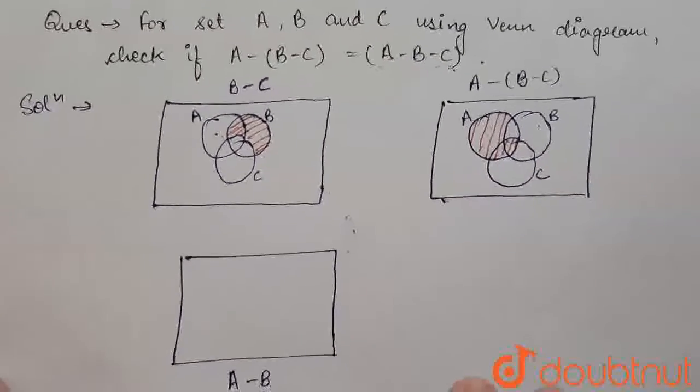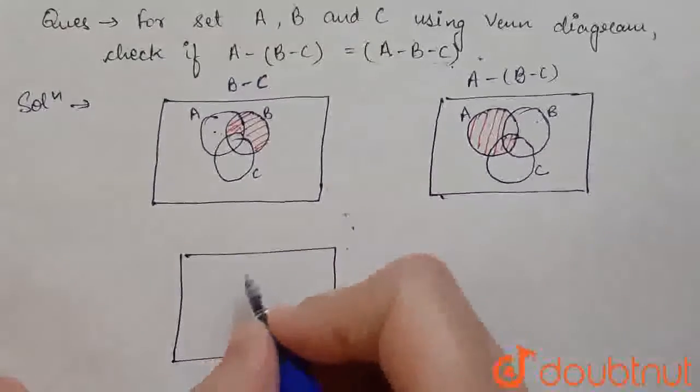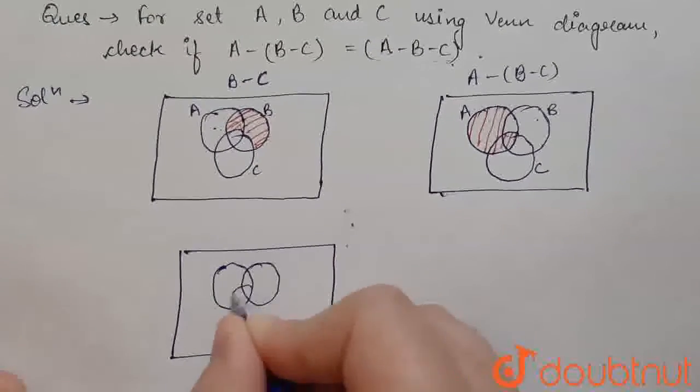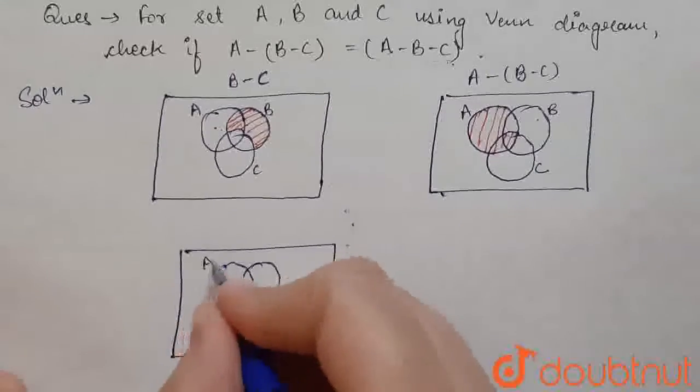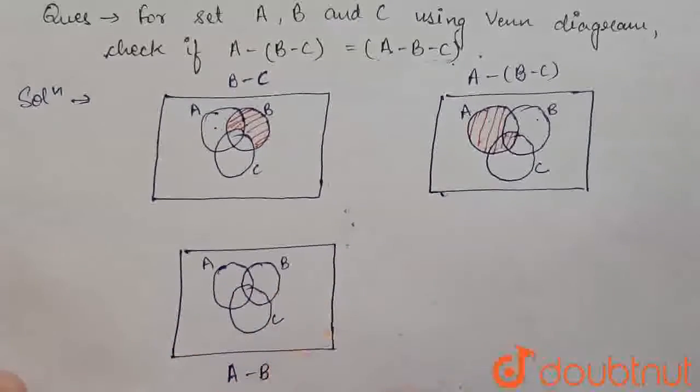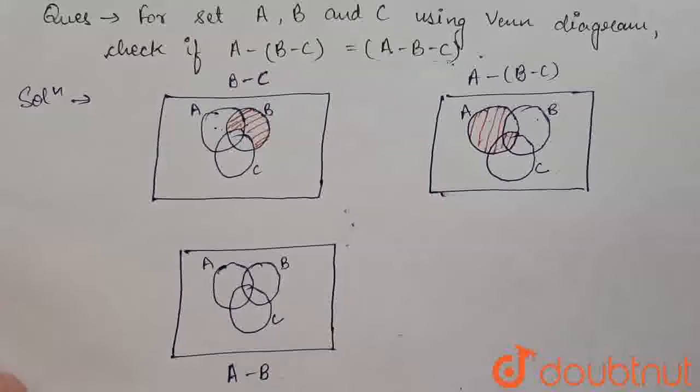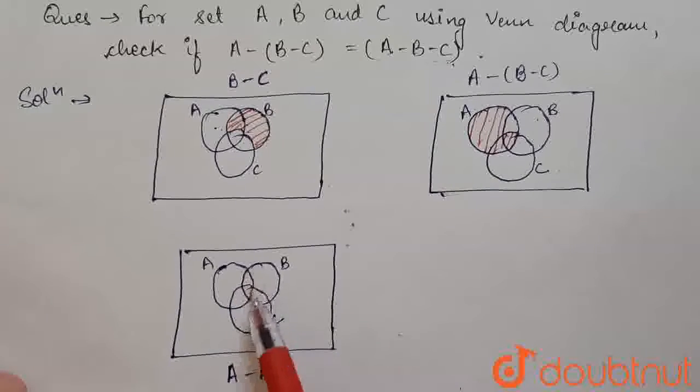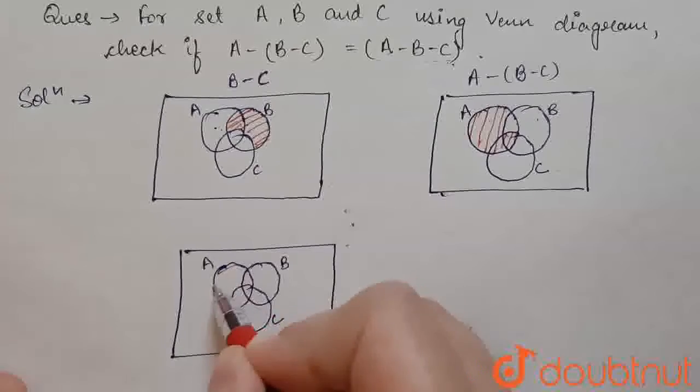A minus B I am calculating. So, on drawing Venn Diagram, this is A, B and C. A minus B is A minus intersection of B and A. So, this part is left to us.